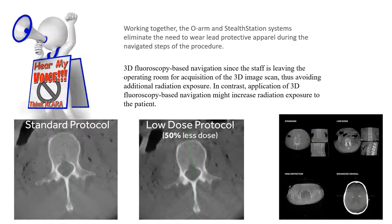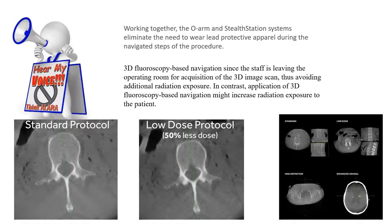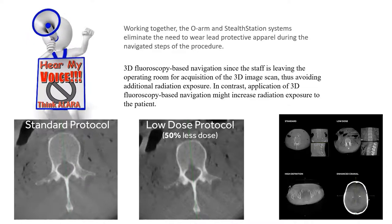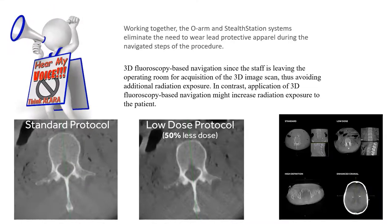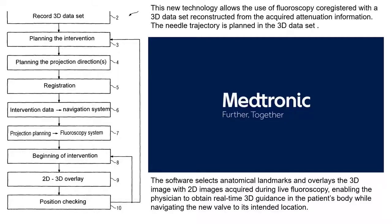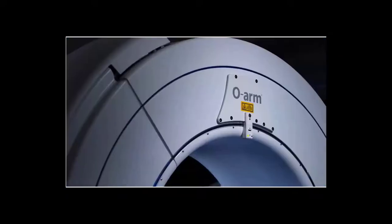Images can be acquired using standard protocols or a low-dose protocol. When images are acquired, staff can leave the room, reducing their radiation exposure. Let's watch a video of this process to get a better idea of how the system is utilized.